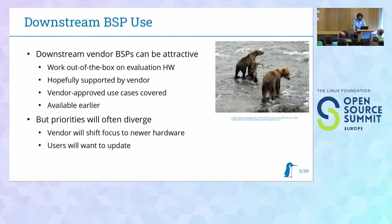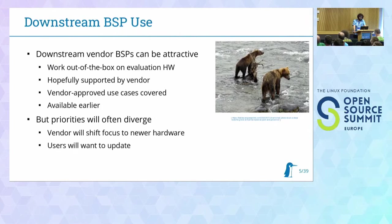Many of these systems use downstream BSPs — BSPs often provided by the silicon vendor or by a module vendor. They are quite attractive because they work out of the box on the evaluation hardware when you don't have any hardware yet, so you want something to try and run demos on. They come with demos, they are hopefully supported by the vendor for some time into the future, and they're usually available earlier. Like these two cubs hunting downstream, they will catch some young fish because the old fish is not upstream yet.